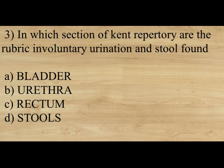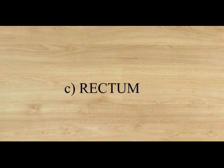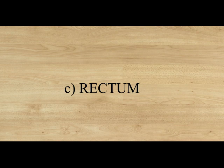Next question: In which section of Kent's repertory are the rubrics involuntary urination and stool found? Option A: Bladder. Option B: Urethra. Option C: Rectum. Option D: Stool. The answer is Option C, Rectum. Please read the question thoroughly — the question is asked from Kent's repertory, so which section of Kent's repertory?